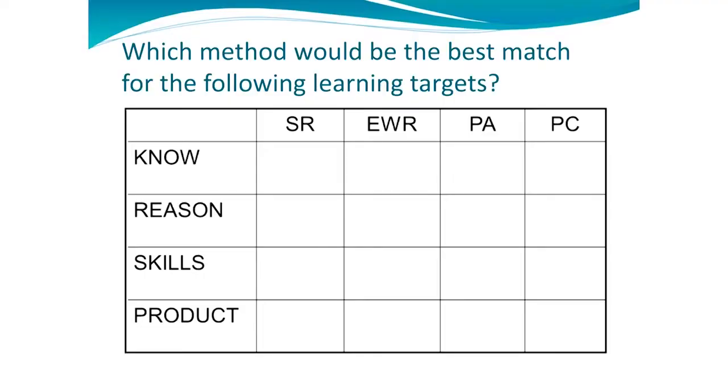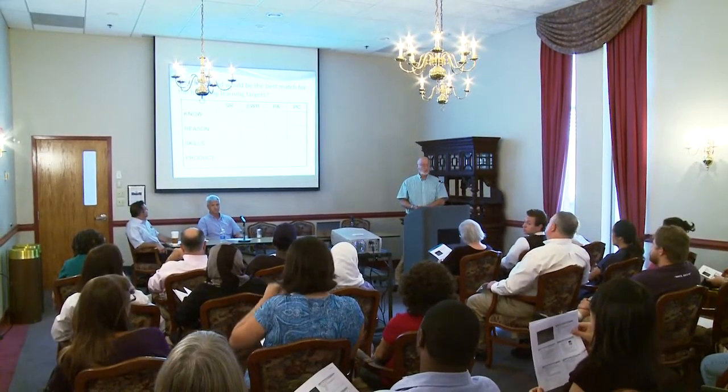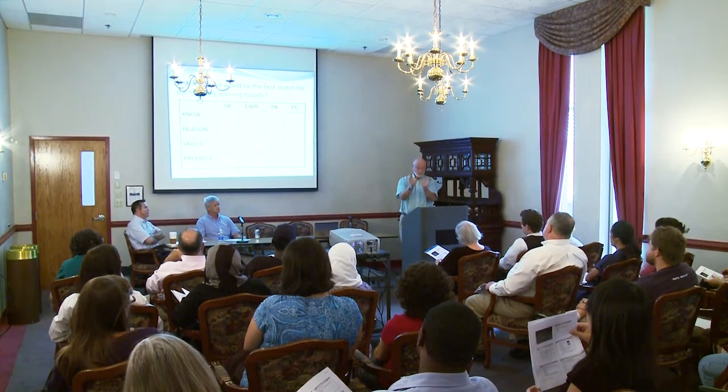Given that, which do we use for what? If we're talking about knowledge targets, what would be a good or best choice? Selected response? Could we also use extended written response for knowledge? When would you want to use one versus the other? Application and use — you could get those with both, and reasoning with both — but what's the difference in terms of kinds of reasoning?